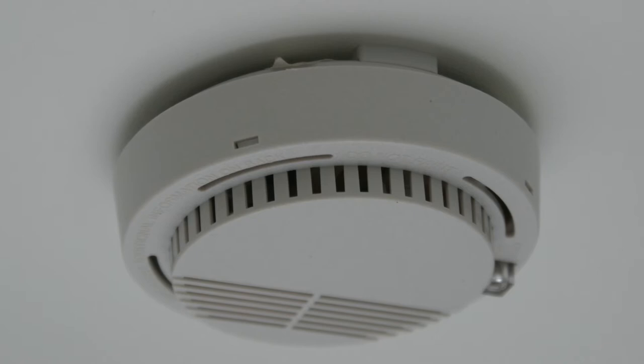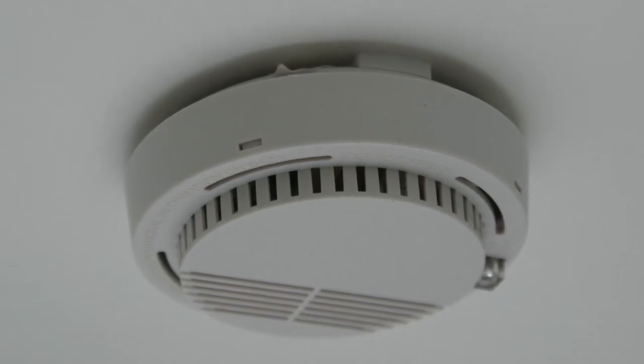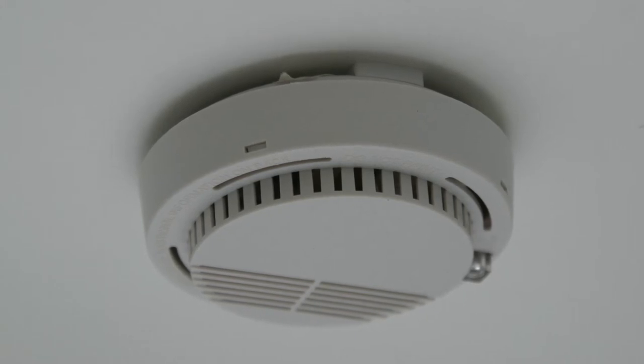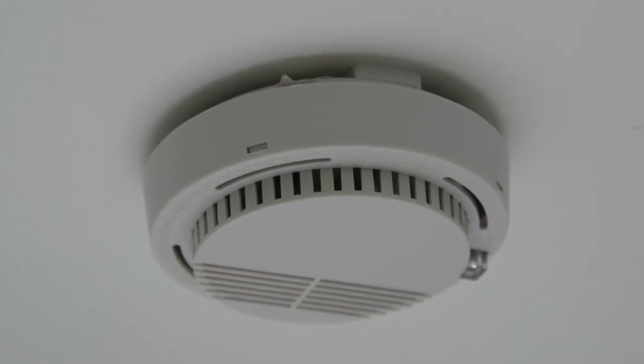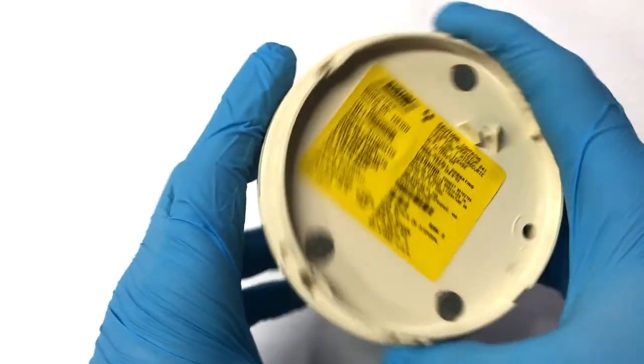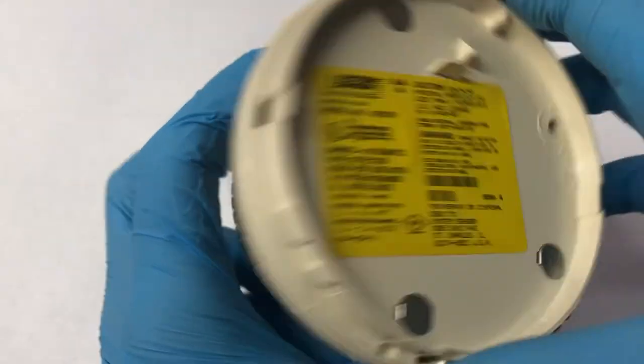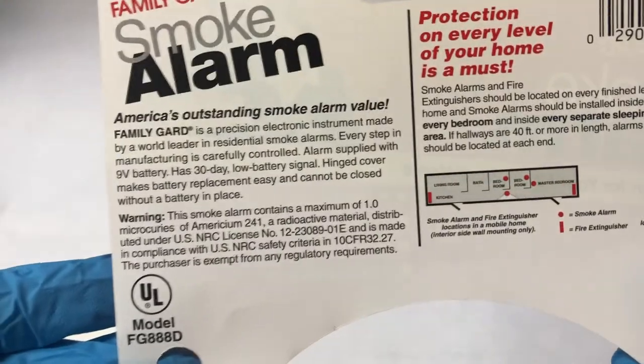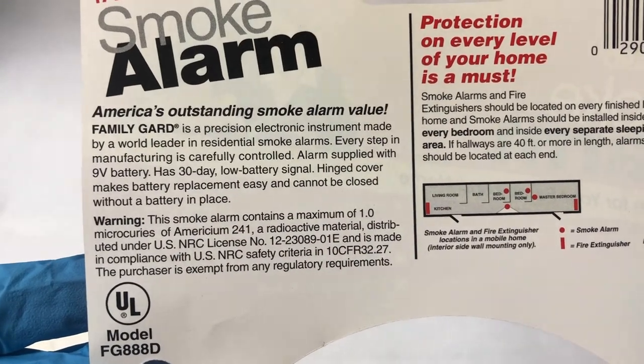Now, you need to first make sure that the device you have is an ionization detector. As 90% of all alarms are, the one that you have will most likely be one. It says somewhere on the packaging that it contains radioactive material. Some are more prompt with this information. Others you have to look through the text a bit, but the warning is there.